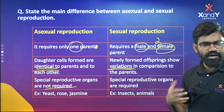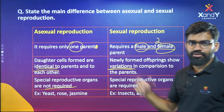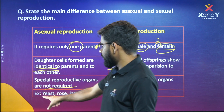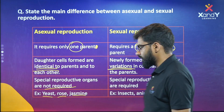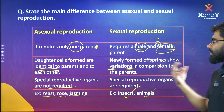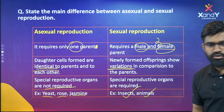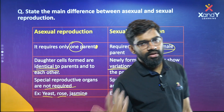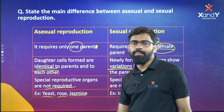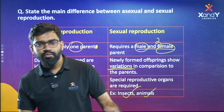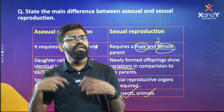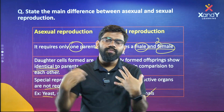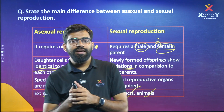Examples of asexual reproduction include yeast, rose, and jasmine. Examples of sexual reproduction include insects and animals. Please don't miss the chart — if you have any other points, be ready to fill them in. Thank you.